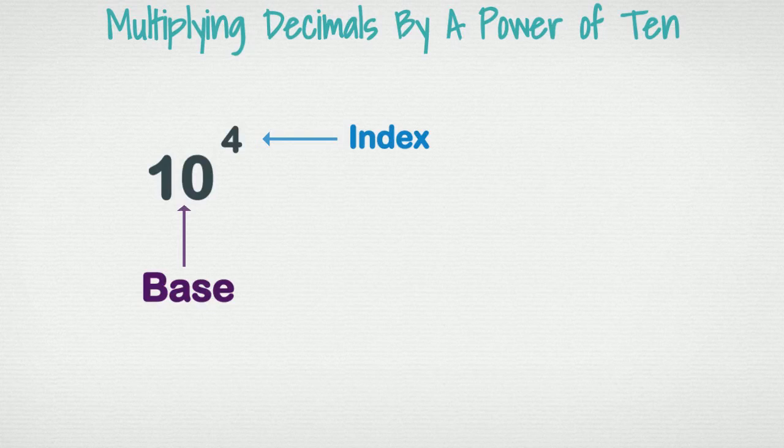So for ten to the fourth power, it would mean ten multiplied by itself four times. What we have learned from previous videos is the index itself gives us clues as to how to quickly identify the standard form of this exponent without doing the repeated multiplication the long way.